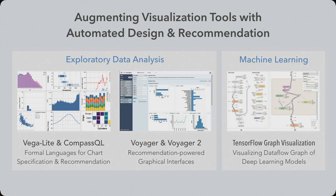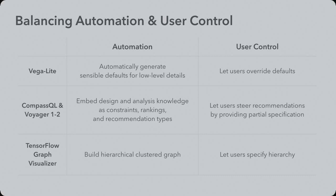To summarize, this talk has shown how automation was added to visualization tools in two critical domains: data exploration and understanding deep learning models in TensorBoard. The common challenge is balancing automation and user control. For Vega-Lite, sensible defaults are generated for details analysts normally wouldn't care about, but users can override them. For Voyager and CompassQL, expert design knowledge is embedded as constraints, rankings, and recommendation types, while users steer recommendations via partial specification. For the TensorFlow graph, automatic layout techniques are applied, but users control the hierarchy by specifying name hierarchies in their source code.